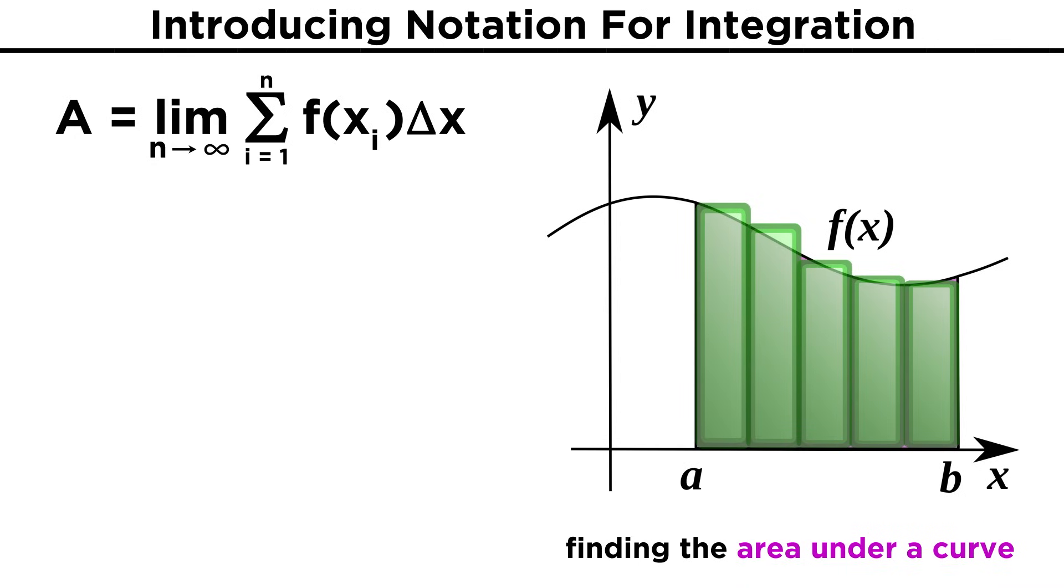In the previous tutorial, we saw that as we add up all our tiny rectangles, we get this expression, with the sum of f of xi times delta x from i equals one to n, in the limit of n approaching infinity. Without getting stuck on all these symbols, let's just think of this as an expression that means, add up all the rectangles.